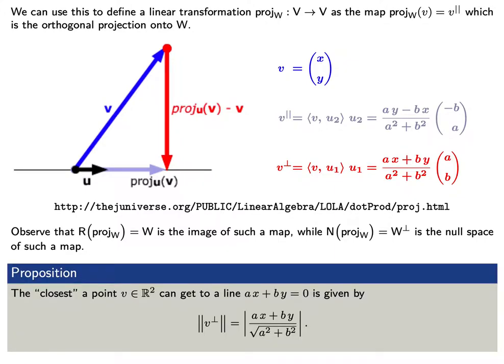We can put all of this together to see that the length of the red arrow is just the closest that a point v can get to the line ax plus by equals zero.